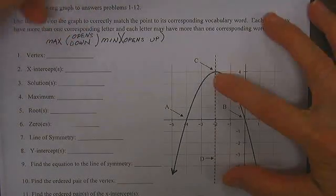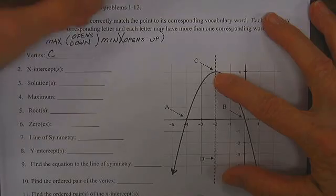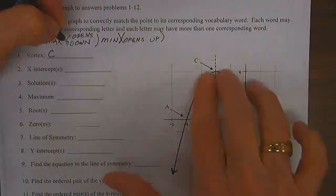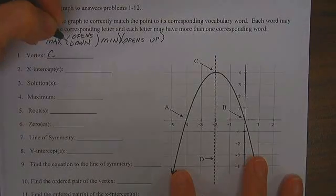So our vertex here, point C, is a maximum because the curve opens downward.